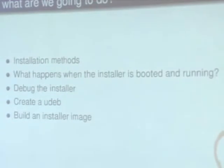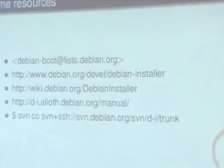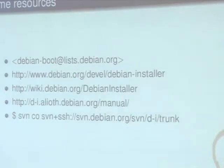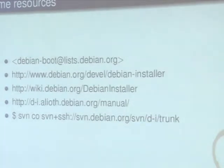Some resources that are important: first of all, the Debian Installer mailing list, where all development communications take place. The Debian Installer project website. The wiki — we've moved a lot of information from the website to the wiki, and it's fairly actively maintained. There's one special resource I'd like to mention: the homepage of the development version of the manual, which is on Alliot. It's linked from the project homepage, of course.